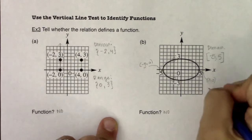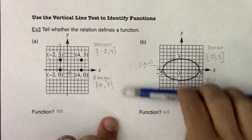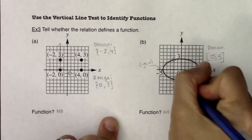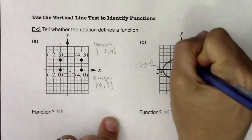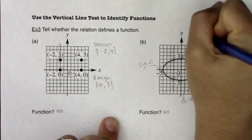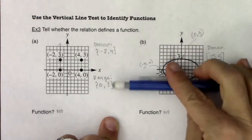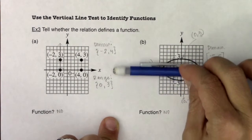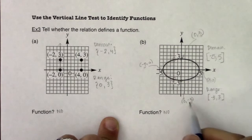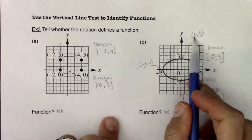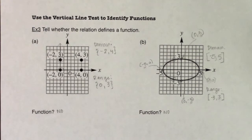On the range side of things, we still go low to high, but for range that means down to up. The lowest point is 0, negative 3, and the highest point is 0, 3. When talking about range, I only care about the y coordinate. So my lowest y value is negative 3 up to my highest y value of positive 3. I want to include both since those ordered pairs are part of my graph, so I put brackets around them: [-3, 3].